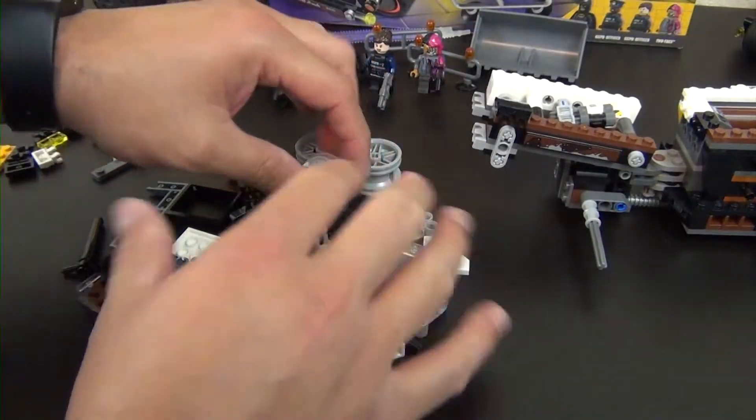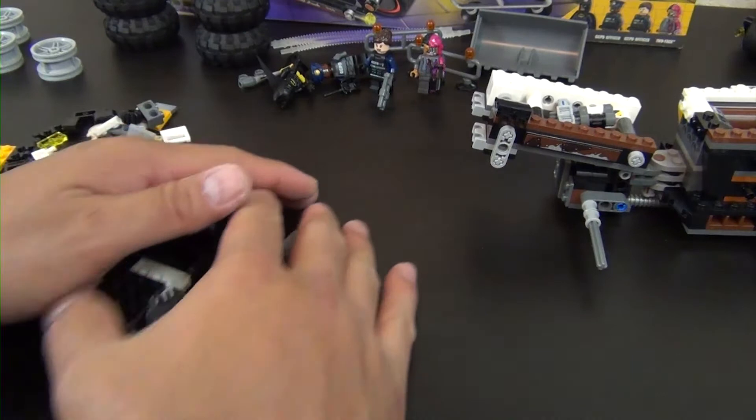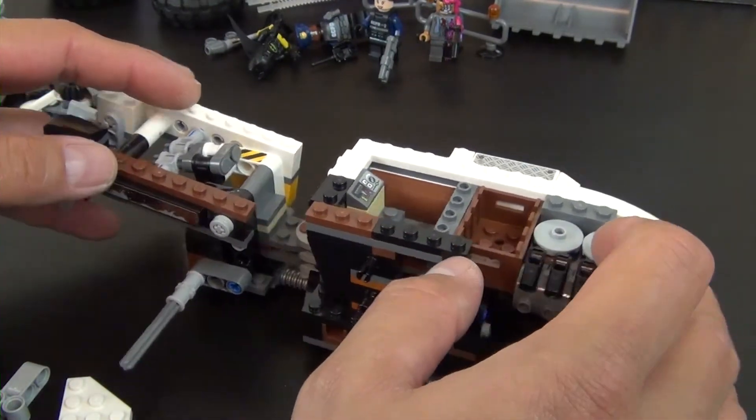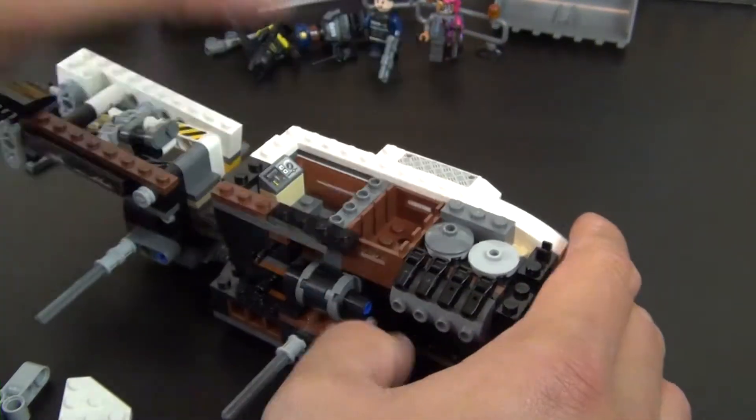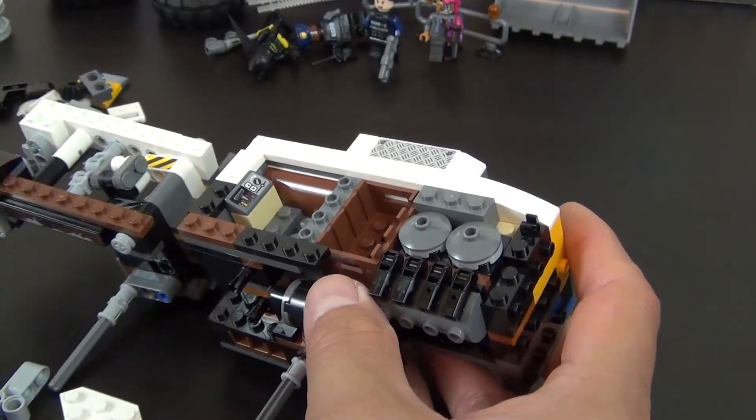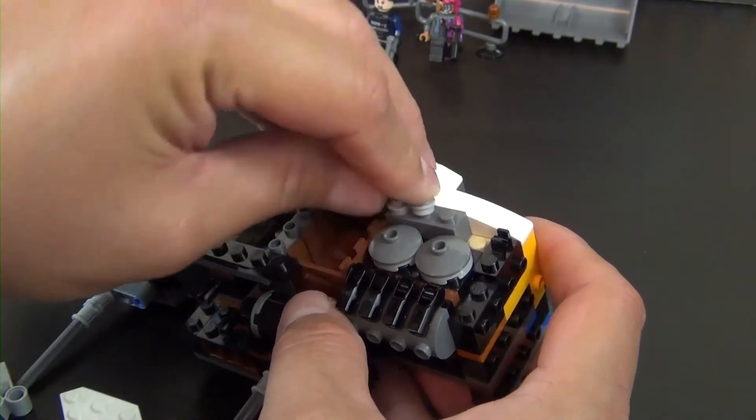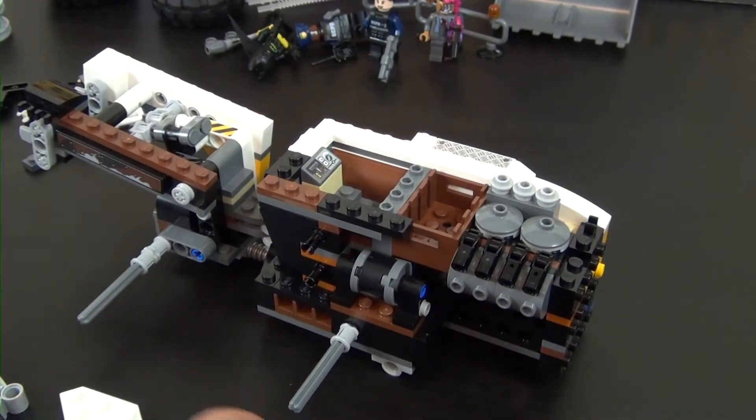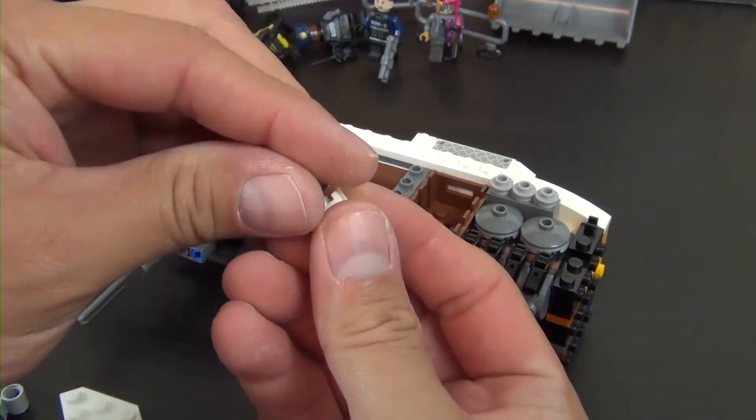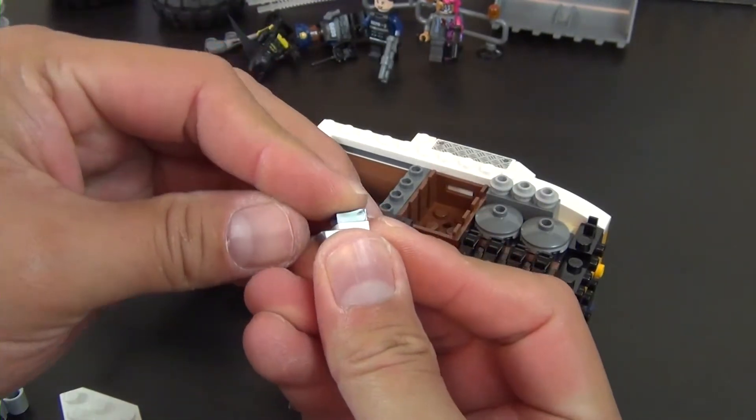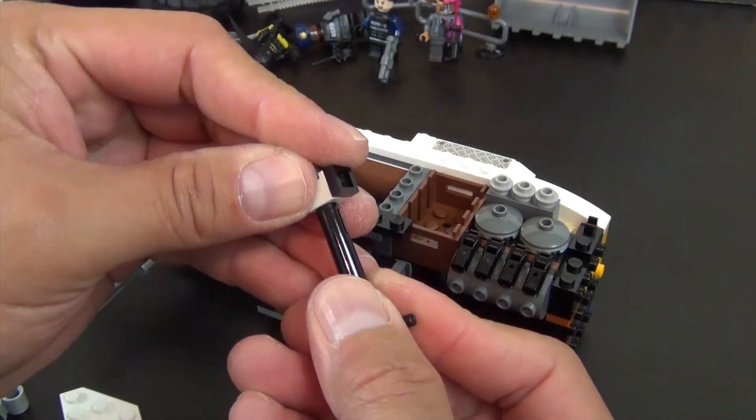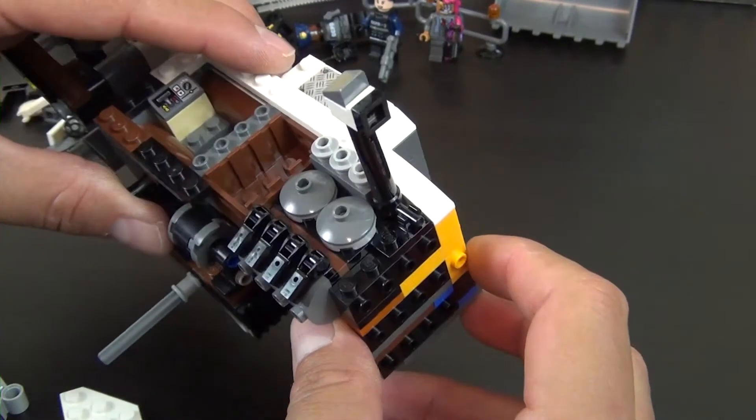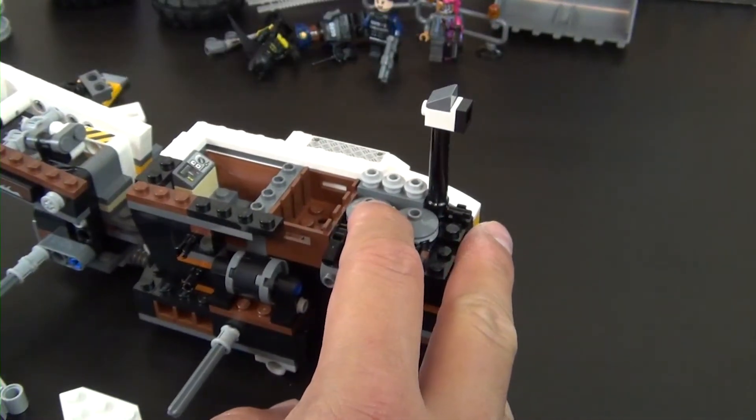So where are we going to begin with this? Let me first move these over. I'm actually going to move this closer so I can move this guy over. All right, so with this in the view, let's start with these. Two by two dishes and we have these studs that have the hole in the top, the hollow studs. I have a headlight brick, a cheese slope, one by one plate.